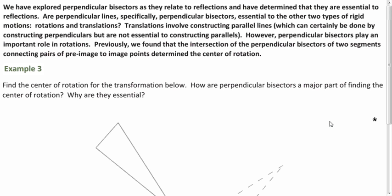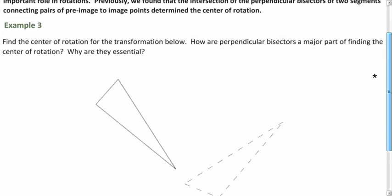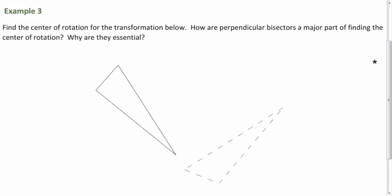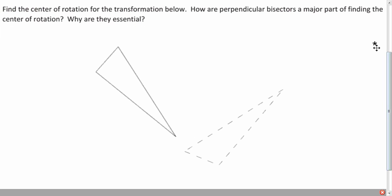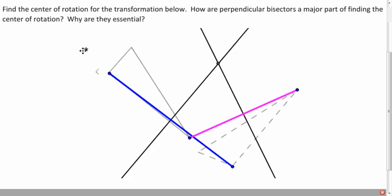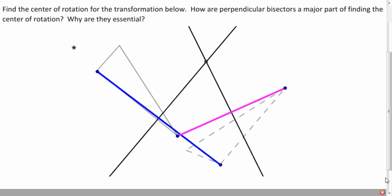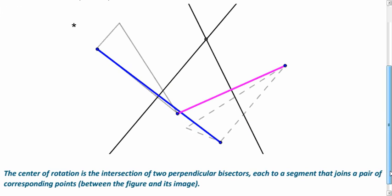But what about rotations? We learned about rotations. Well, think about how we find the center of rotation. How are the perpendicular bisectors important, and why do we need them? Well, to find the center of rotation, you have to construct perpendicular bisectors of corresponding points. And so I joined these points with a blue segment, and these two with a pink segment. I found the perpendicular bisectors. And so here is the center of rotation.